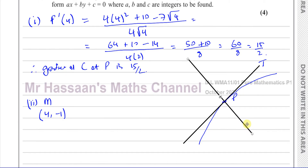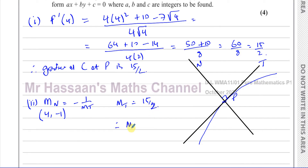So the gradient of the normal will always be perpendicular to the gradient of the tangent. The gradient of the normal is the negative reciprocal: minus 1 over the gradient of the tangent. Since the gradient of the tangent is 15 over 2, the gradient of the normal is minus 2 over 15. We have point P at (4, −1) and gradient of normal is −2/15.